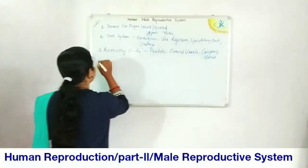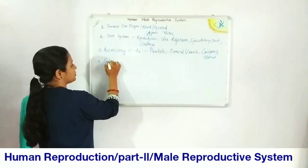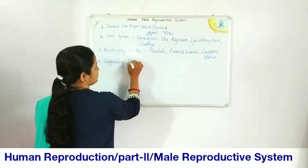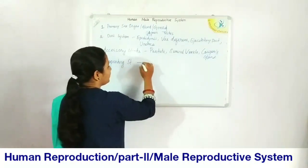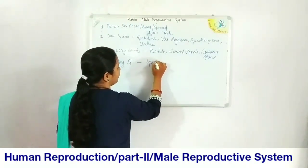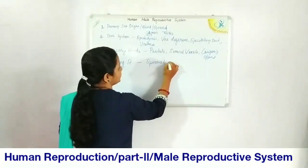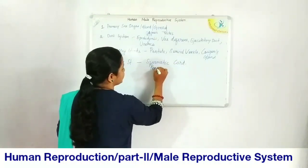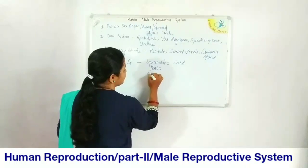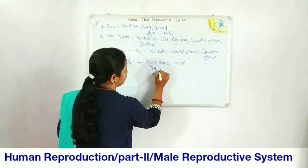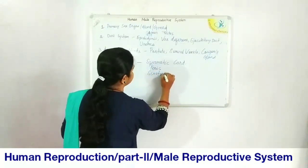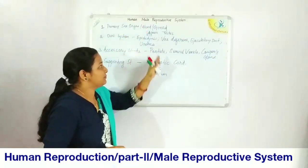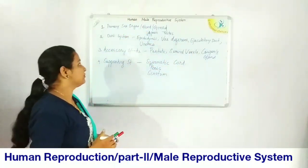There are also some supporting structures: the spermatic cord, the penis, and the scrotum or scrotal sac. So these are the list of male reproductive organs in humans.